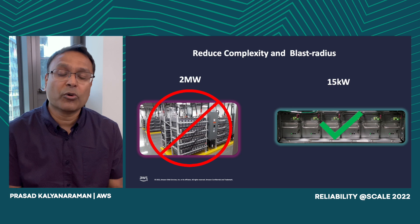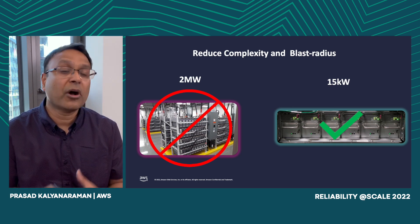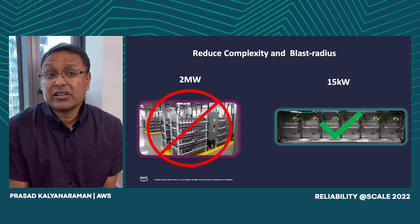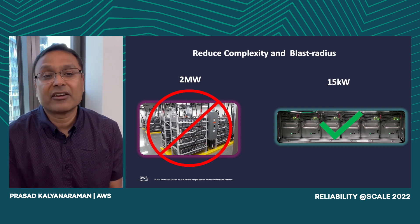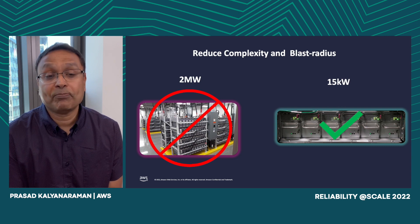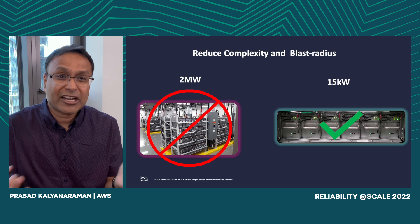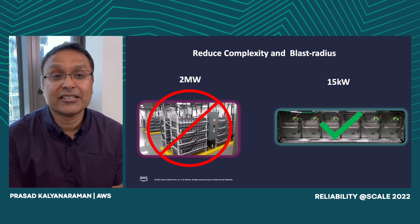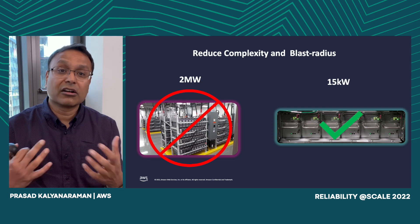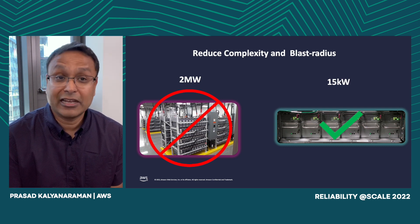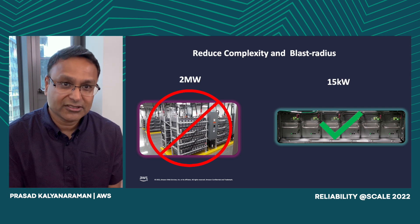We changed the design over time to reduce our blast radius from any kind of power event to literally 15 kilowatts — meaning a single rack which has battery backup power inside it. In addition to reducing blast radius, this also reduces complexity, since some of the harder things in electrical power design involve making sure you understand UPS operations.